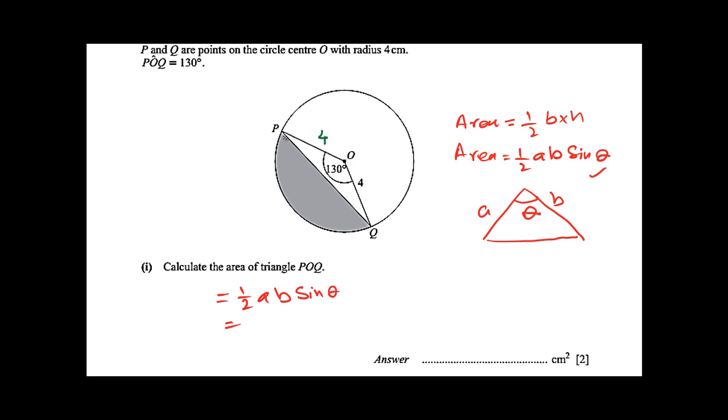Because OP and OQ are the radius. And we call it included angle, 130 degrees is also given.